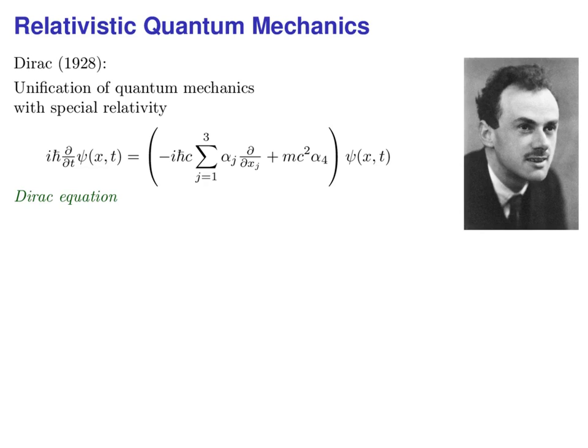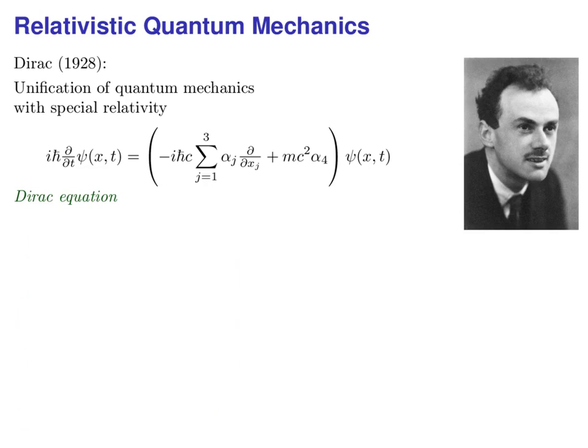This contradiction can be resolved, which leads us to the unification of special relativity with quantum mechanics, the so-called relativistic quantum mechanics. Again its core is a differential equation, the so-called Dirac equation. This equation is relevant until today. It describes the behavior of quarks and leptons. Quarks are the constituents of protons and neutrons, which make up the atomic nuclei, and the electron is one of the leptons.